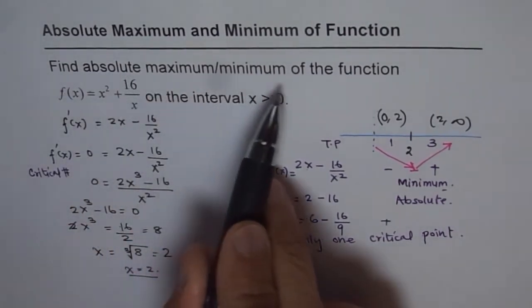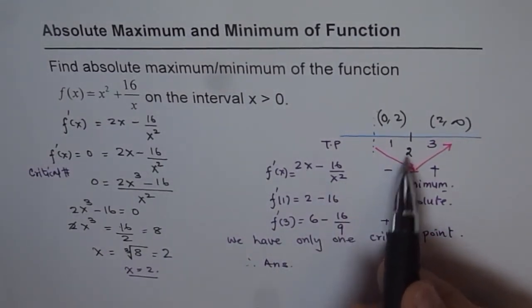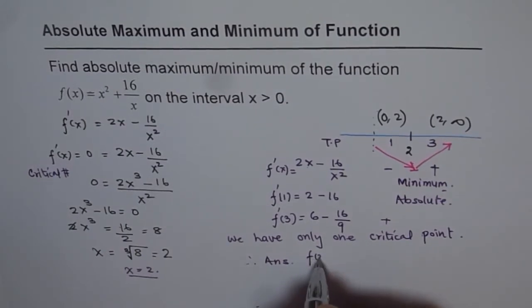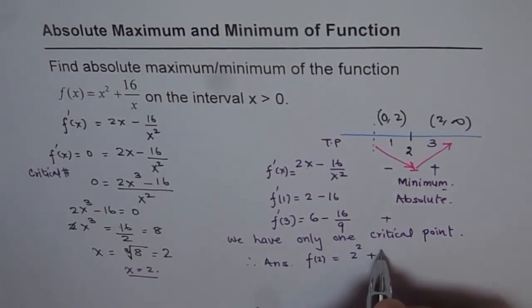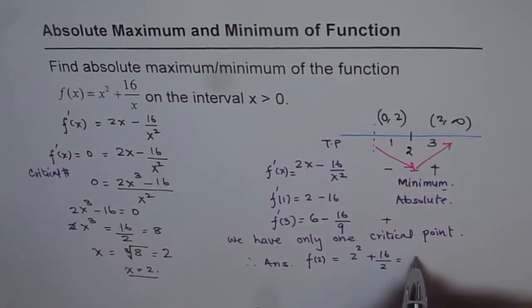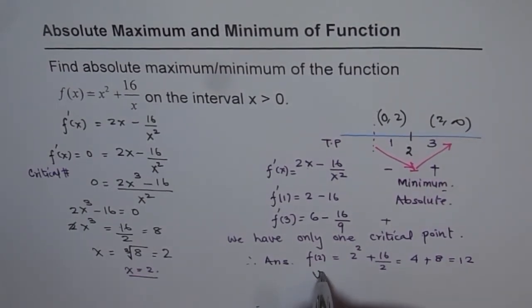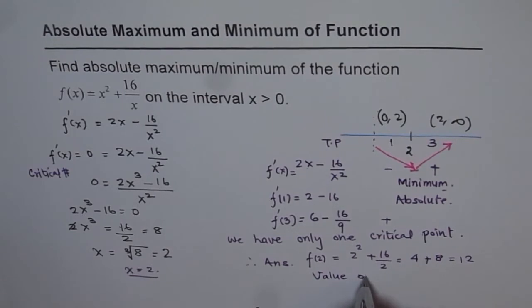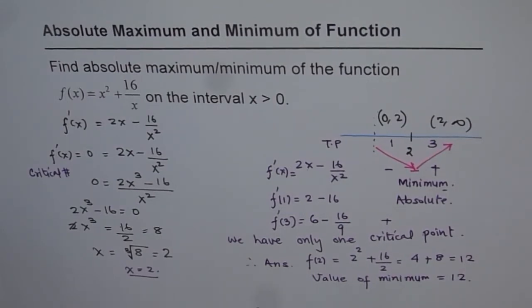Find absolute maximum of the function. We have to find the value of the function at 2. f(2) = 2² + 16/2, which is 4 + 8 = 12. So the value of minimum equals 12. That is how we are going to answer the question. Thank you.